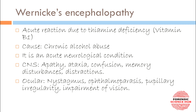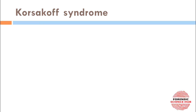The ocular changes in Wernicke's encephalopathy include nystagmus — rapid involuntary movement of the eyes — ophthalmoparesis, which is weakness or paralysis of the muscles responsible for eye movement, pupillary irregularity where the pupil may get dilated or constricted irregularly, and impairment of vision.